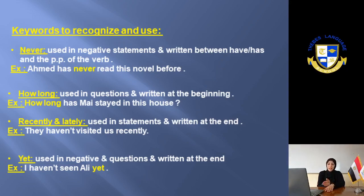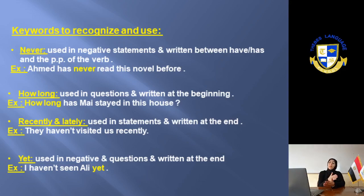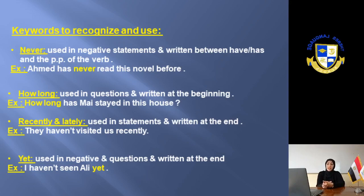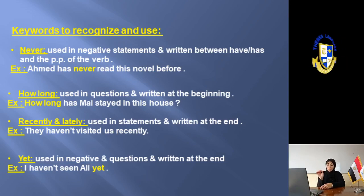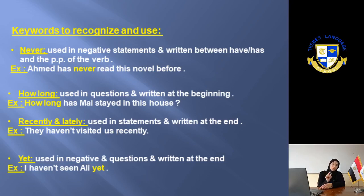'Never' is written between 'have'/'has' and the past participle of the verb, as in the example: 'Ahmed has never read the novel before.' For the next keyword — 'how long' — we all know it's a question form. 'How long' is used in questions and written at the beginning. For example: 'How long has Mai stayed in the house?' ending with a question mark. The keyword 'recently' is used in statements and written at the end of the sentence, for example: 'They haven't visited us recently.'